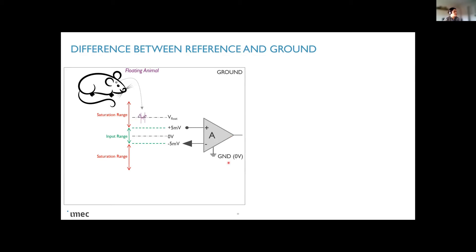So it could be that the signal will be in the saturation range, and you won't be able to record it with our amplifier. So having the ground connected will make sure that the signal that we record is within this input range.